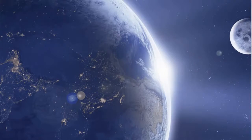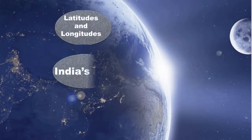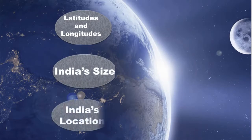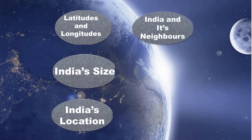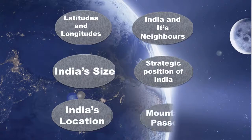Today we will learn the first lesson of Geography of Class 9th: India — Size and Location. For our convenience, we will divide the lesson into six parts: latitudes and longitudes, India's size, India's location, India and its neighbors, the strategic position of India at the head of the Indian Ocean, and the significance of mountain passes in ancient times.